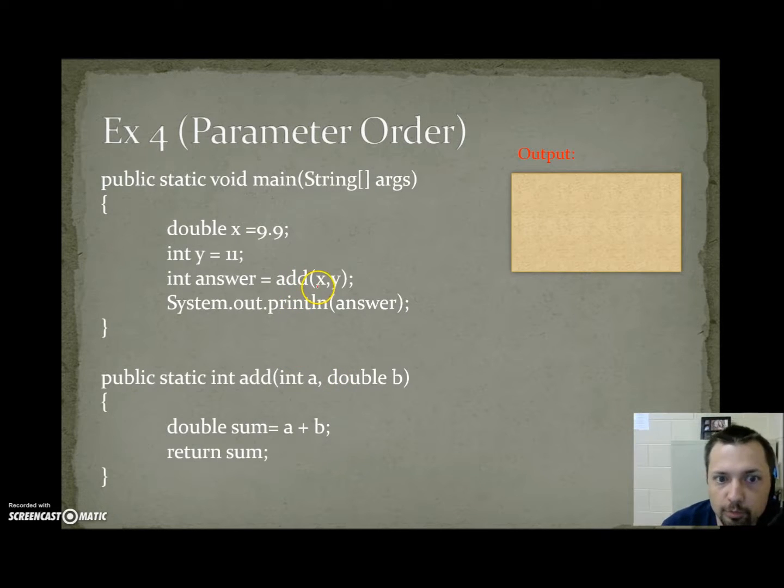Parameter order. We're going to go through parameter order again, but at least now we have a different example. x equals 9.9, y equals 11. So x is a double, y is an int. We call add x comma y. What it's really sending is x, which is 9.9, comma 11. 9.9 gets sent to the first variable.